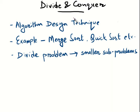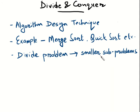The core concept of divide and conquer is quite simple. You are given a problem of relatively big size. What you do is break down this problem into various smaller sub-problems. Then you solve these smaller sub-problems and combine their solutions to get your final solution.